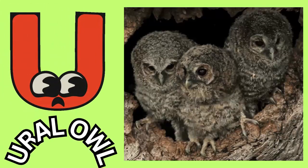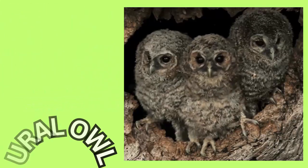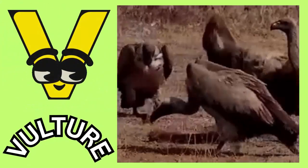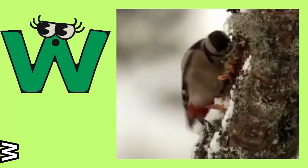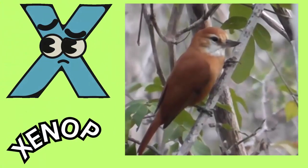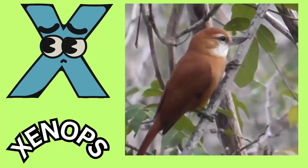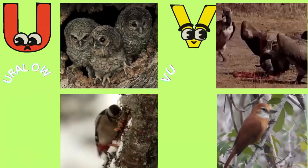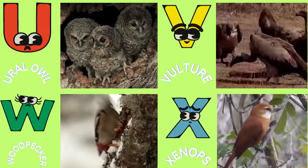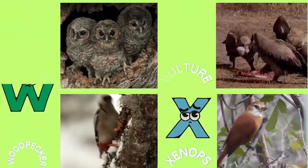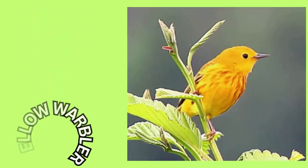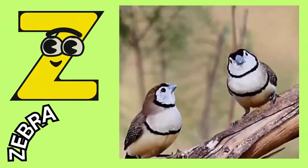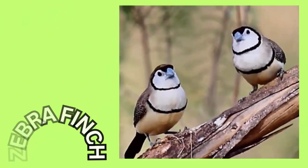U. U for ural owl. V. V for vulture. W. W for woodpecker. X. X for xenops. Y. Y for yellow warbler. Z. Z for zebra finch.